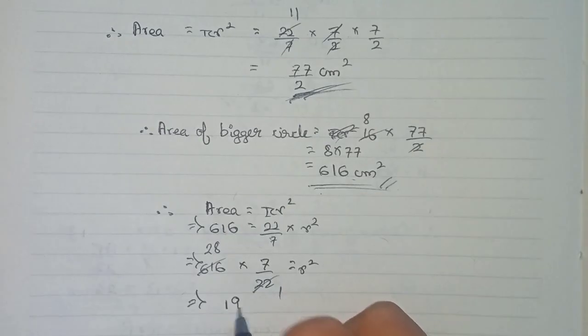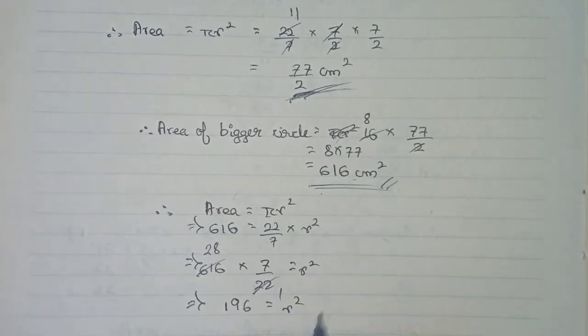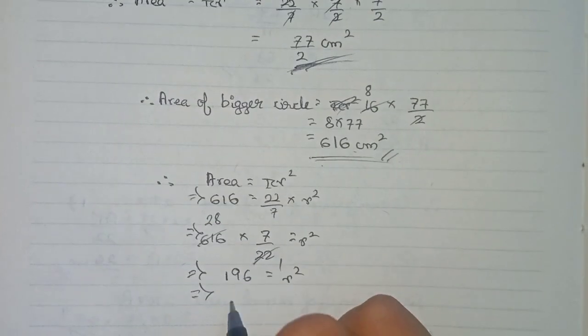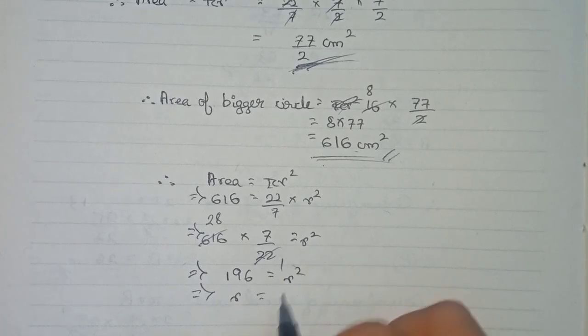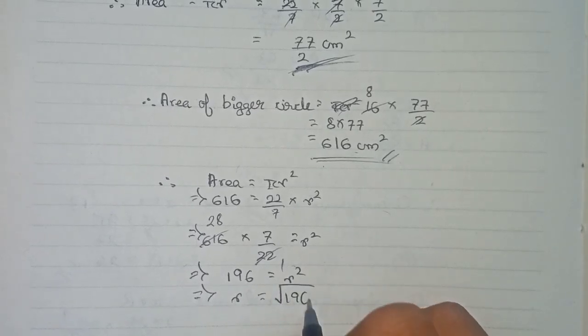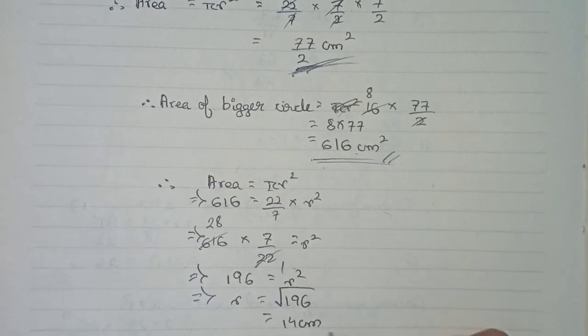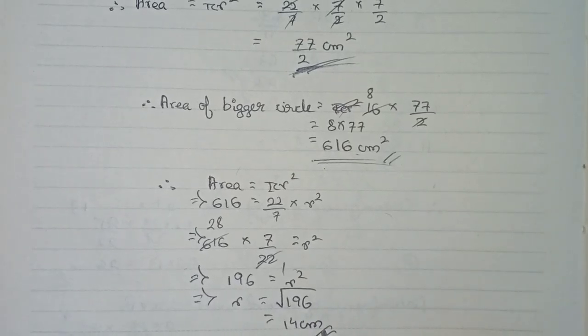Now to remove this square, we have to root over 196. So root over 196 means 14, 14 centimeter. Therefore the radius of the bigger circle is 14 centimeter.